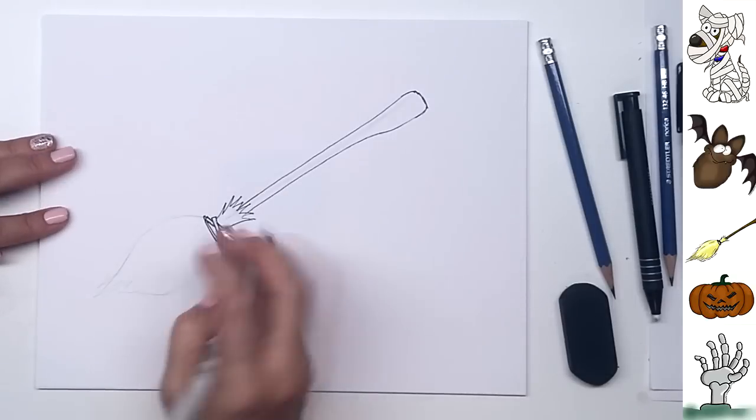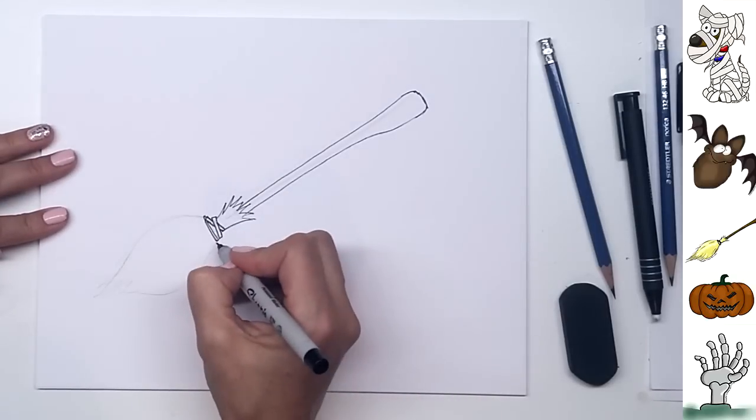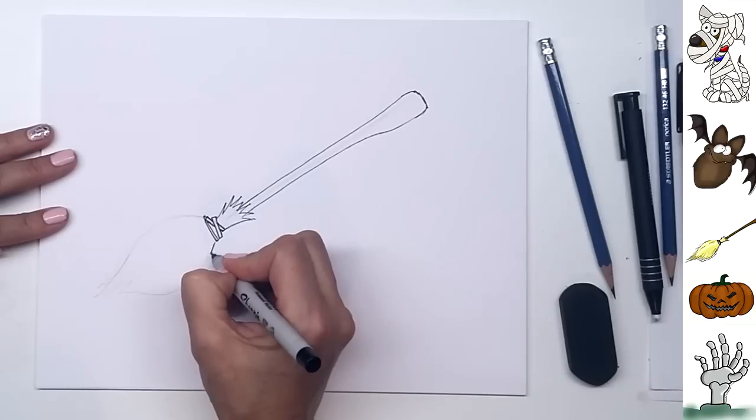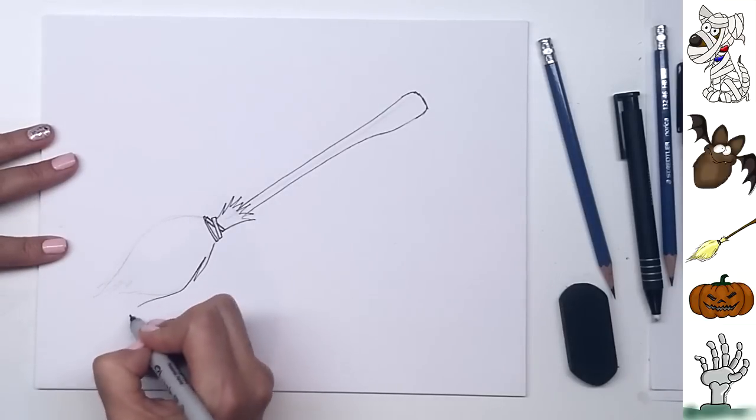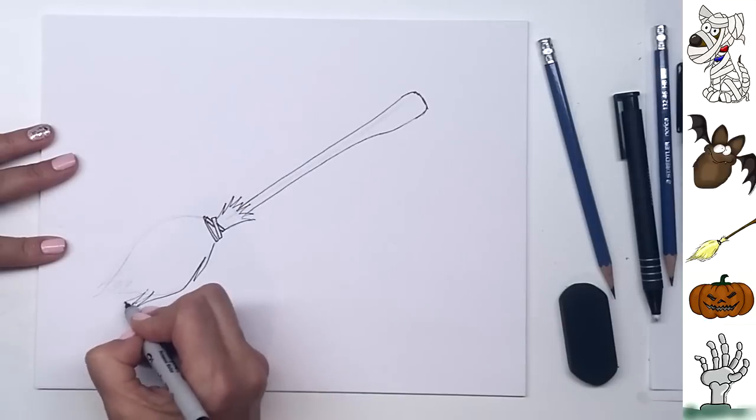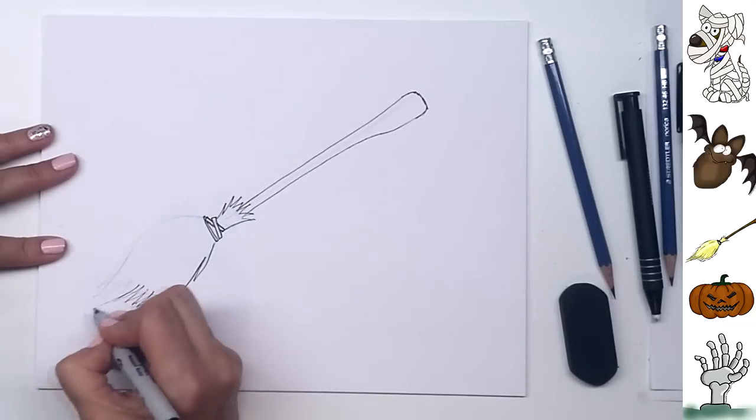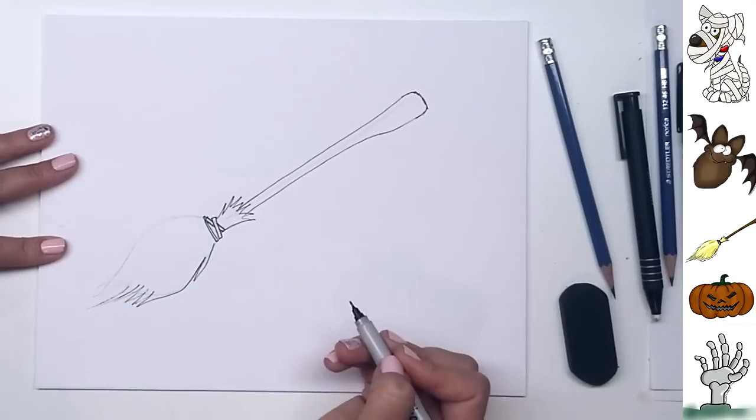Great. And now we can draw the straw at the bottom. And so for this part here, I'm just going to make a little bit of a messy piece that's sticking out. And then I'm going to curve down towards the back end. And I'm going to make some more messy pieces here. These are just little strokes in the straw of the broom.